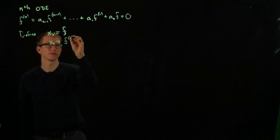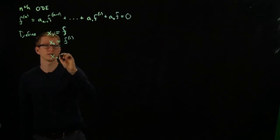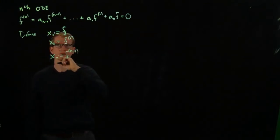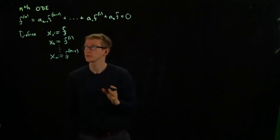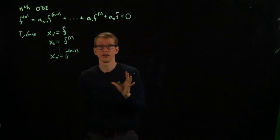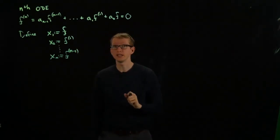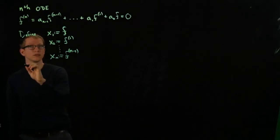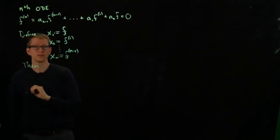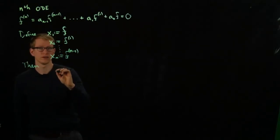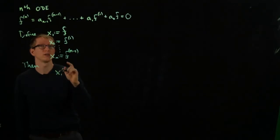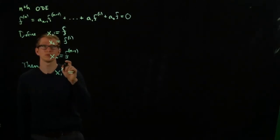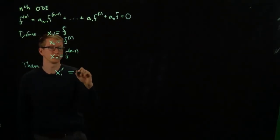We set x_2 to be the first derivative of f, and so on, up until we define x_n as the (n minus first) derivative. With these variables defined, we can see that the derivative of x_1 with respect to the input variable t is equal to x_2.